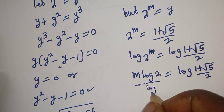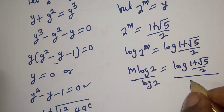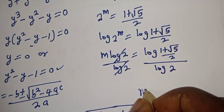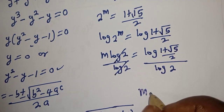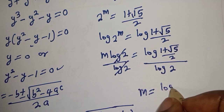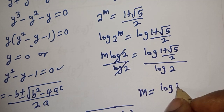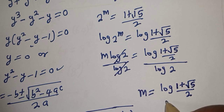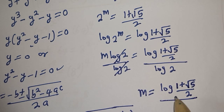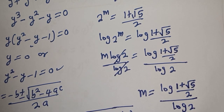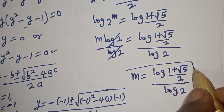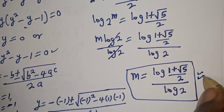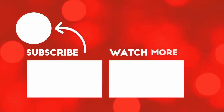Dividing both sides by log 2, m is equal to log of 1 plus square root of 5 over 2, all divided by log 2.